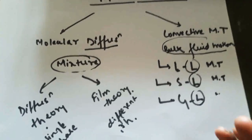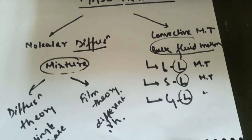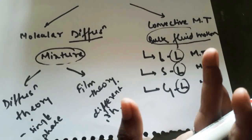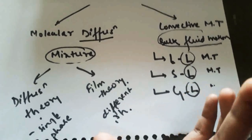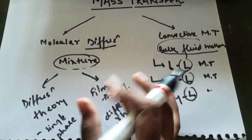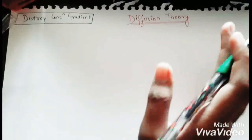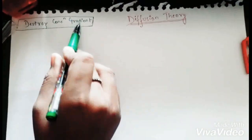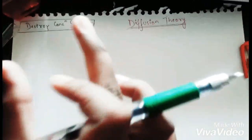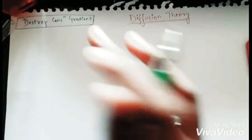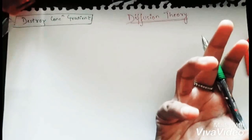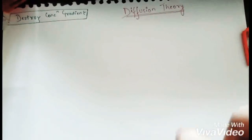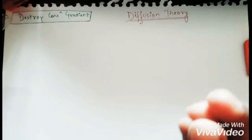In this video we will consider only the molecular diffusion part, discussing diffusion theory and film theory. Remember, this topic is very important from a competitive exam perspective — GATE, GRE, etc. — because bioprocess is a subject widely asked in these examinations. The key sentence to remember is: everything we do in mass transfer is to destroy the concentration gradient, so that we attain equilibrium in a mixture or solution.